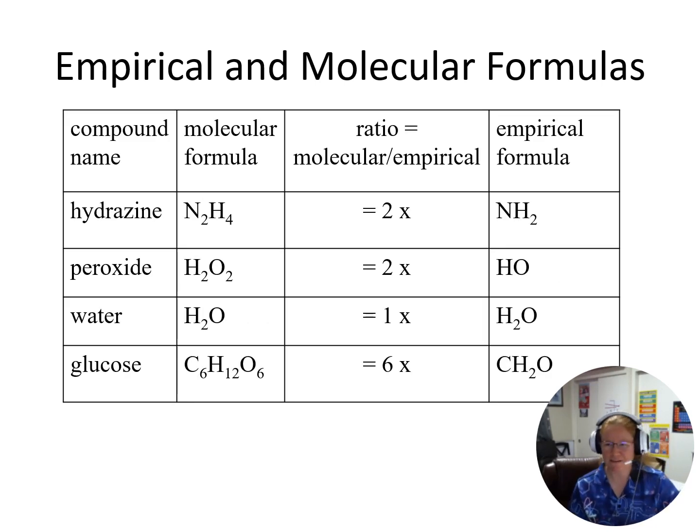So here's a few examples. So hydrazine is N2H4, and so my empirical formula would be NH2. Peroxide, H2O2. So empirical formula is just HO. Water, H2O. Can't get any lower than that. So H2O. Glucose, C6H12O6. So I can divide that whole thing by six and get an empirical formula of CH2O.